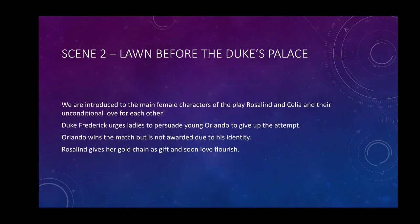Celia and Rosalind talk, and a courtier enters to tell both ladies about the ongoing wrestling match. The wrestling match is organized, and the courtier also tells them how Charles the wrestler has already defeated three young lads. Duke Frederick also enters with his lords and persuades both ladies to go and convince young Orlando not to enter the match. Everyone tries to persuade him, as he is young and people are compassionate about him.